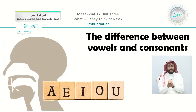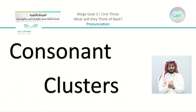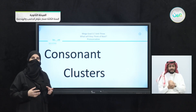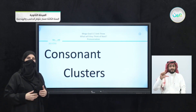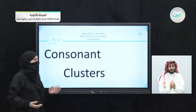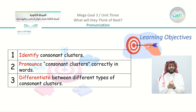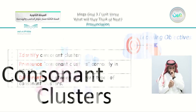Now we are going to move on to something else. If you remember, in unit one I explained the difference between vowels and consonants. Now there is something new called consonant clusters. Since we are talking about sounds and pronunciation, we are going to talk about consonant clusters in our pronunciation lesson. Our objectives are: to identify consonant clusters, pronounce consonant clusters correctly in words, and differentiate between different types of consonant clusters.